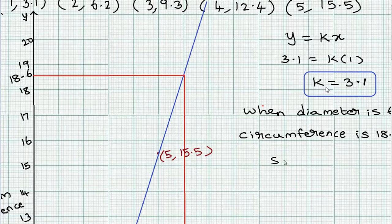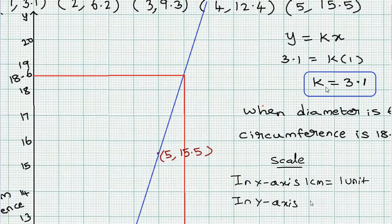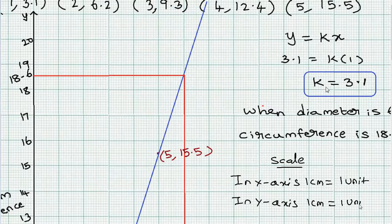For scale, in the x-axis 1 cm equals 1 unit, and in the y-axis 1 cm equals 1 unit. We use this graph scale.